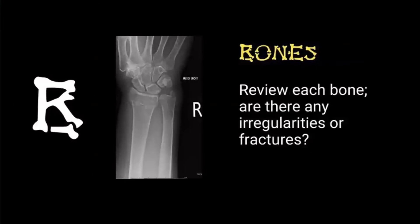B — review each bone. Are there any irregularities or fractures? Go around the edges of the bones and see what's there. Think about whether you've got bilateral x-rays and what the shape of all the bones looks like. Does something look wrong? It might be that you don't know what it is or what is wrong — if something doesn't quite look right, ask a friend.